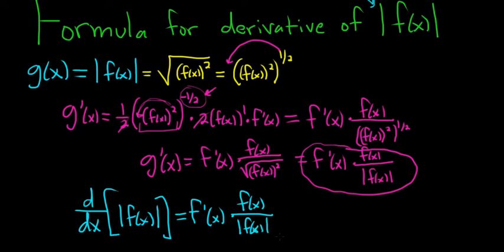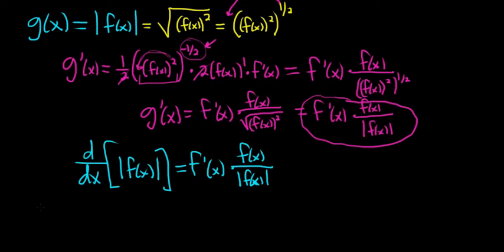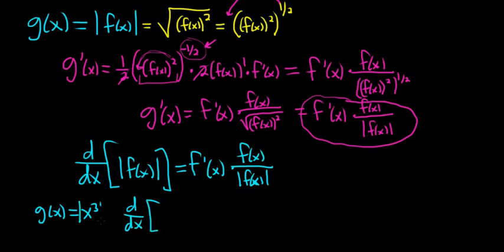So to recap the formula: if you take the derivative with respect to x of the absolute value of f of x, you're going to get f prime of x times f of x divided by the absolute value of f of x. Obviously here f of x is not equal to zero. Let's do a quick example — let's keep it simple and do g of x equals the absolute value of x cubed. Method one: let's do it with our formula. So d/dx of the absolute value of x cubed.